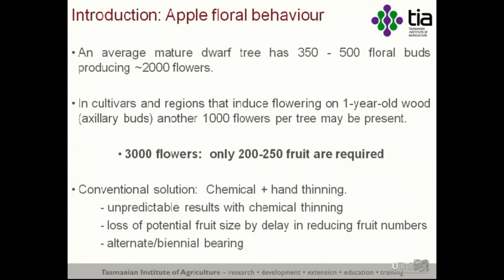The problem with chemical thinning is that the results are unpredictable. There's no problem with the chemistry itself, but when applying it to a biological system, there are all sorts of things that can go wrong. Adding the human factor — concentrations, spray coverage — makes it more unpredictable. We also lose potential in fruit size because of the delay in reducing fruit numbers. Furthermore, the floral load and early fruit development delay can induce alternate or biennial bearing in some genotypes, which is commercially unacceptable but physiologically interesting as it gives us tools to work with.